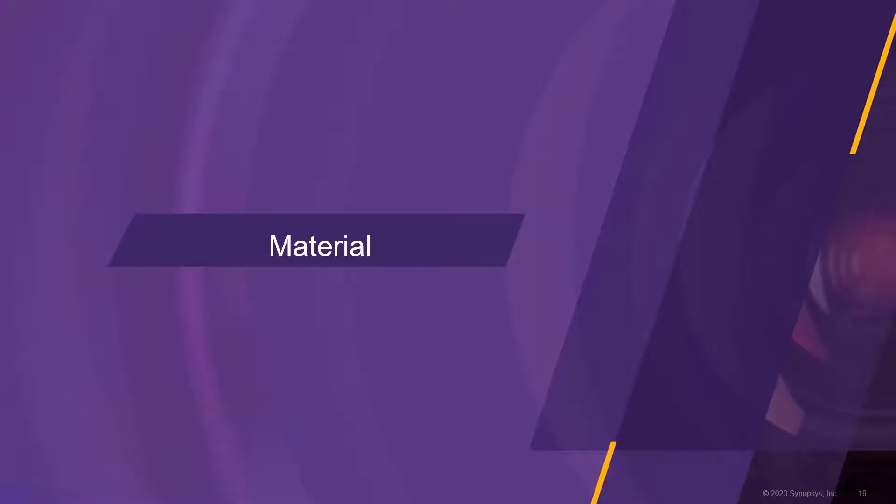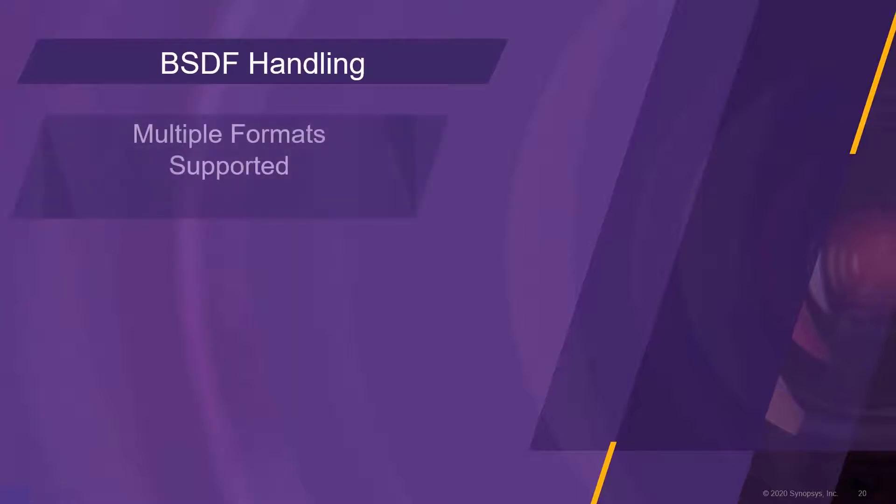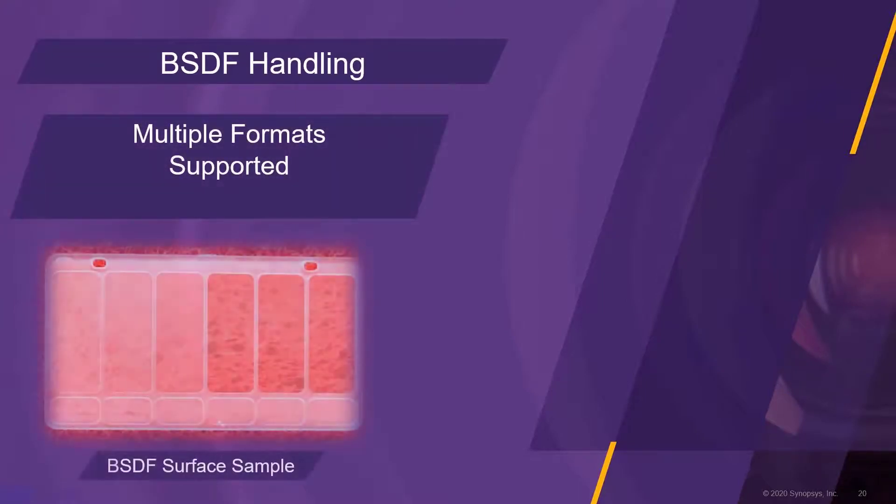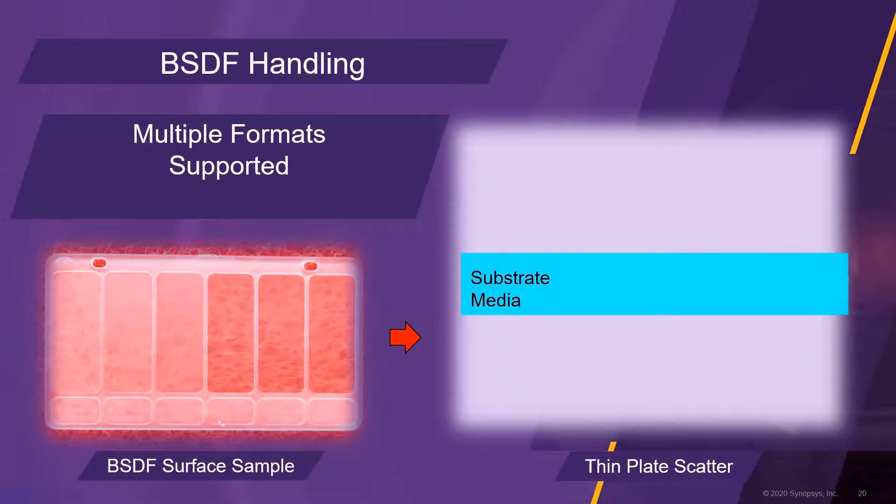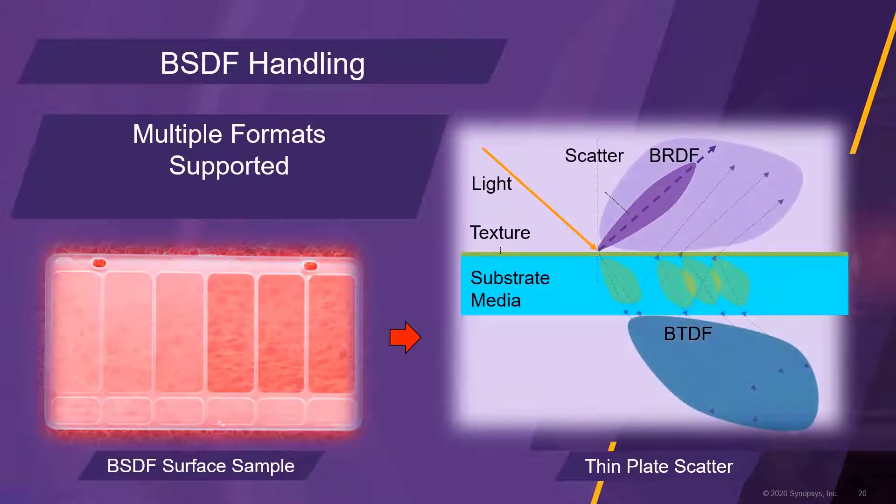We now come to the materials section. LucidShape CAA supports a variety of surface scattering formats. A bidirectional scattering distribution function, in short BSDF, can be expressed as a data set of scattering probabilities, dependent on the incident angle. A BSDF consists of two parts, a bidirectional reflection distribution function with the acronym BRDF for the reflected light, and a bidirectional transmission distribution function with the acronym BTDF for the transmitted light.